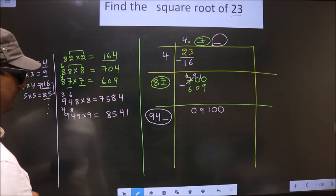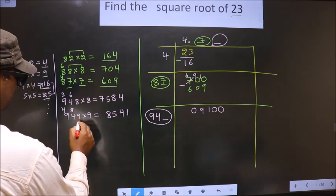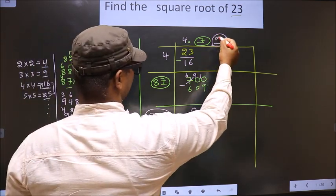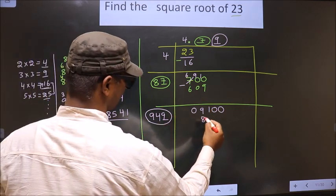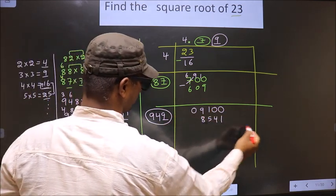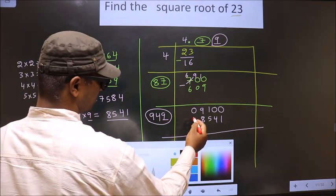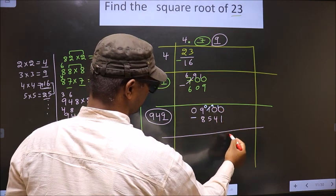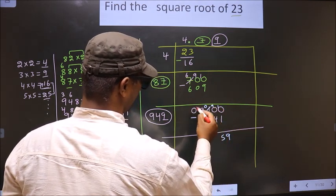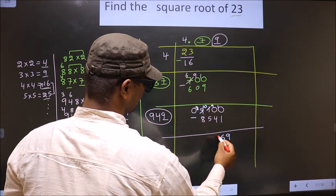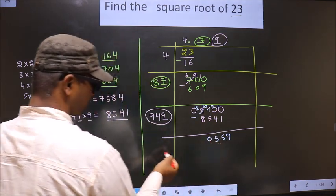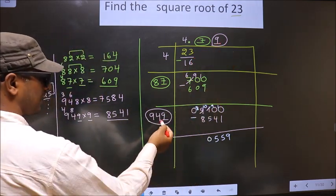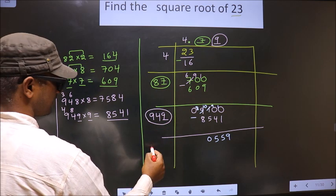We cannot take 10, so we take 9 itself. So write 9 here, 9 here, and below 8541. Now subtract: 10 minus 1 is 9, 9 minus 4 is 5. Here 10 minus 5 is 5, 8 minus 8 is 0. Remainder is 559. Now add these two numbers: 949 plus 9 is 958.